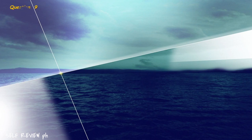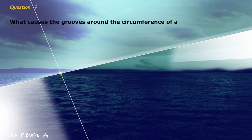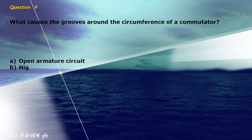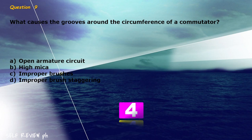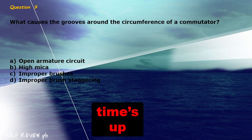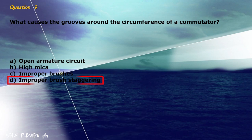Question 9: What causes the grooves around the circumference of a commutator? A) open armature circuit, B) high mica, C) improper brushes, D) improper brush staggering. The correct answer is letter D, improper brush staggering.